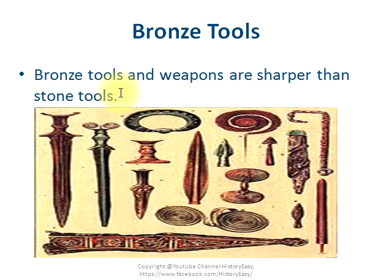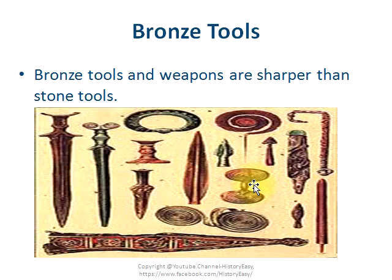The bronze tools and weapons were sharper than the stone tools, obviously because they were made of metal. Metal has properties like malleability and ductility, which enable tools to be made in any desirable shape to a much greater extent as compared to the Stone Age tools.